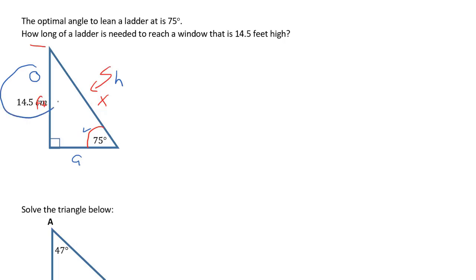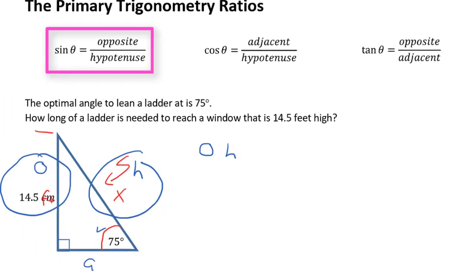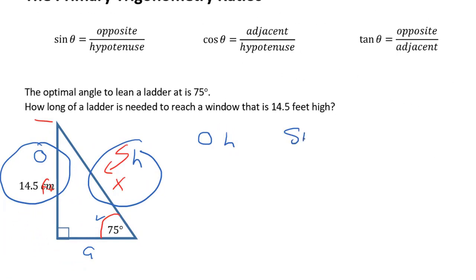Because we know some information about the opposite side and we are looking for the hypotenuse, we need to find a primary trig ratio that uses opposite and hypotenuse. And if you take a look up above here, you'll see that that has to be the sine ratio.